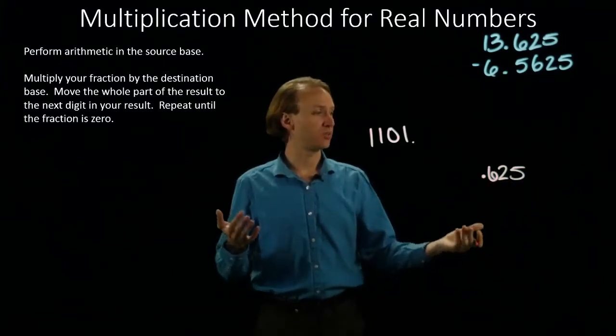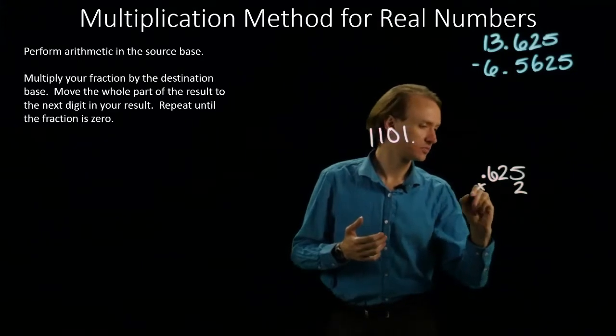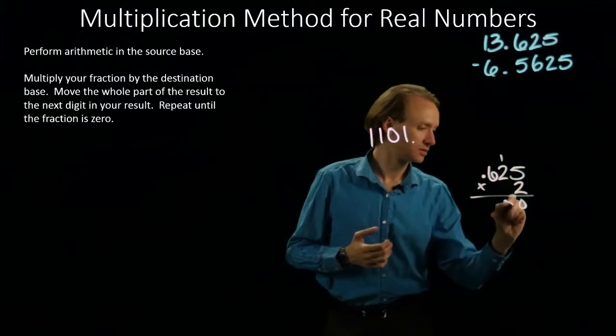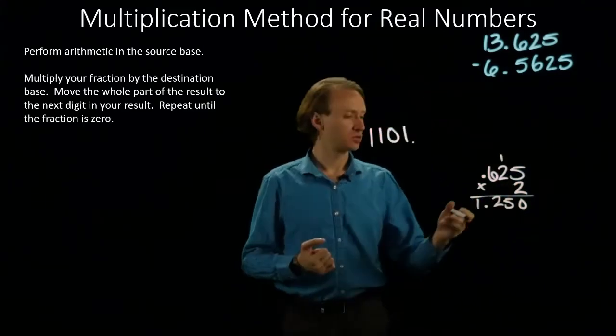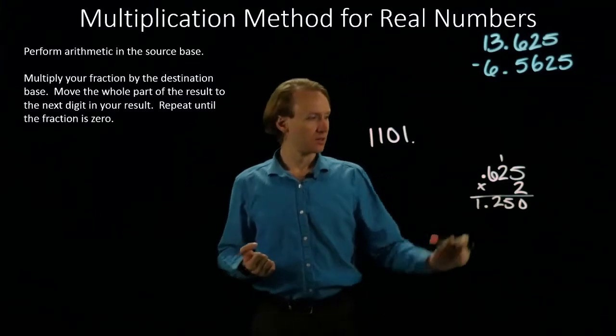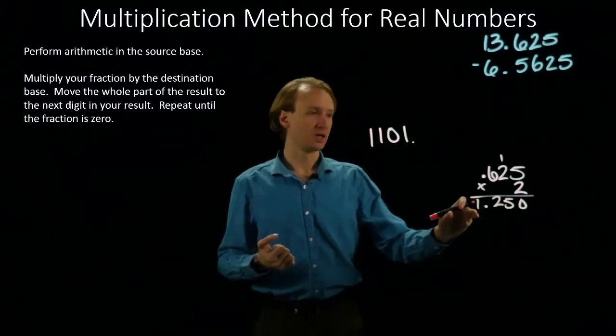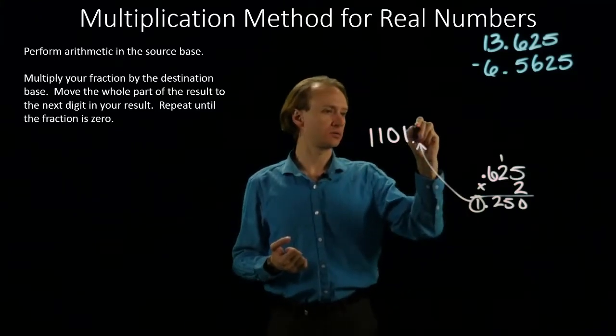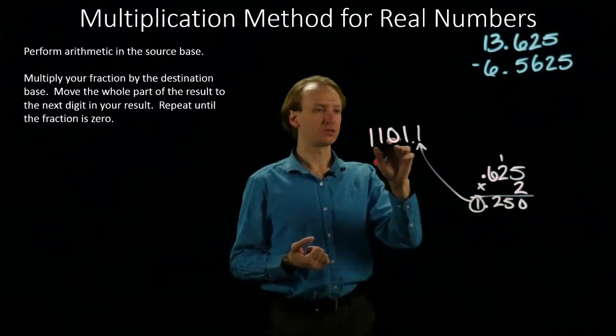And my algorithm says to multiply this by the destination base. I'm converting this to binary, so my destination base is 2. So, I get 1.25 as my result. Next thing it tells me to do is to take this whole part of my result and move it up here. So, I now have 1101.1.